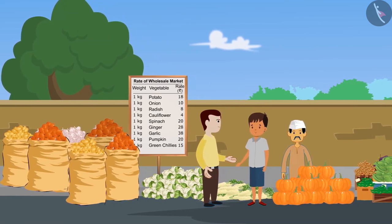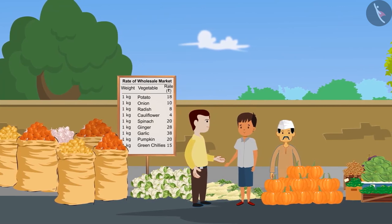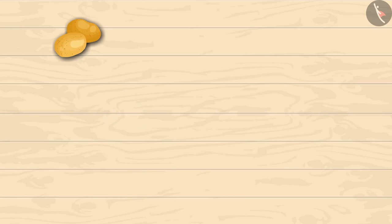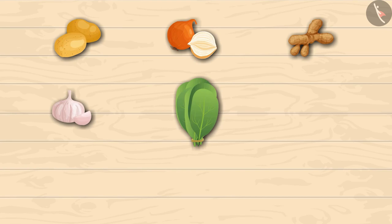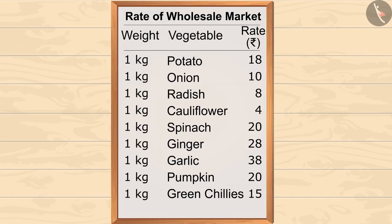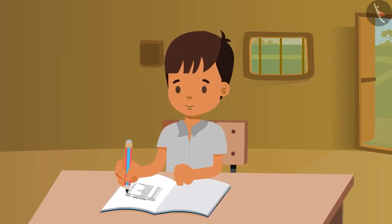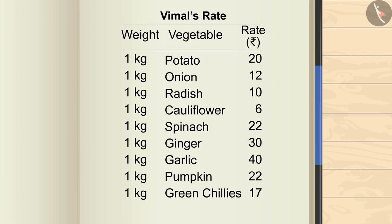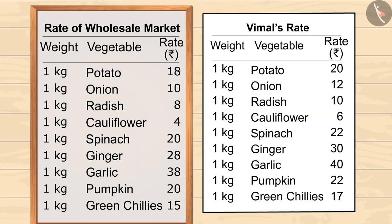Vimal gets up early every morning and goes to the wholesale market to buy vegetables. Today Vimal bought potatoes, onions, ginger, garlic, spinach, cauliflower, pumpkin, radish, and green chilies. You can see their prices according to the wholesale market. After returning home, Vimal prepared a list. Kids, can you tell the difference between the two lists? You can pause the video to find out.